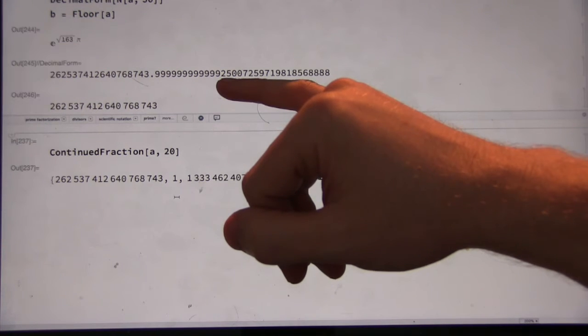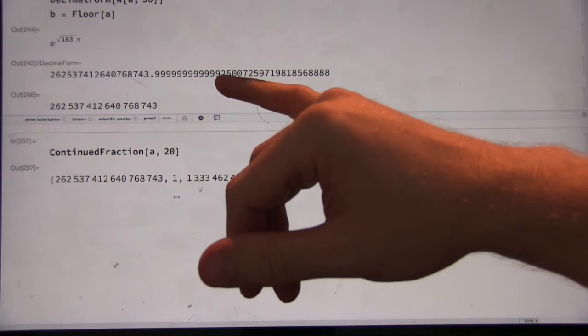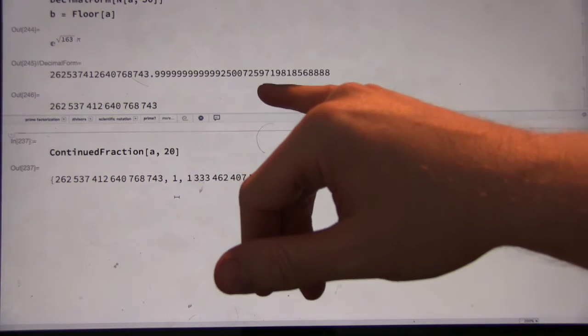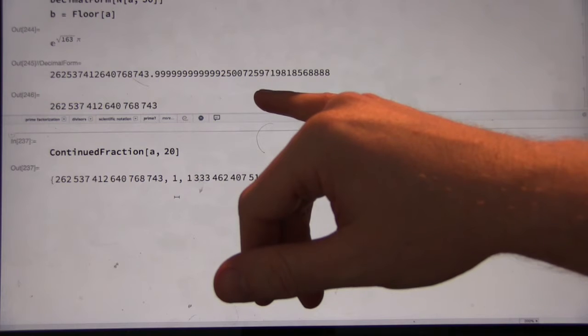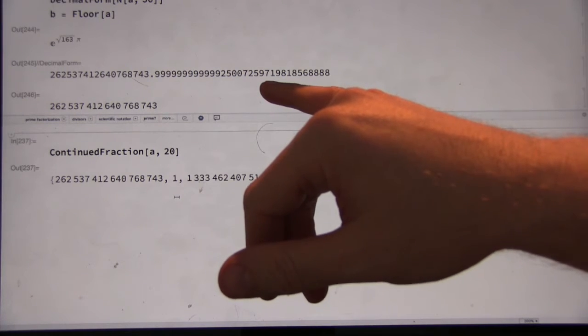Well, because this is really close to an integer. Well, 0.999999, you know, whatever. When I flip that over, why do I get a number that begins with a 1 point something? Because it's less than 1, but really close to 1. So when you flip it over, you'll get something more than 1, but really close to 1.